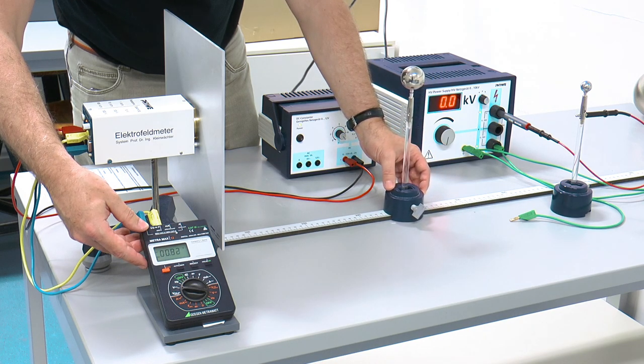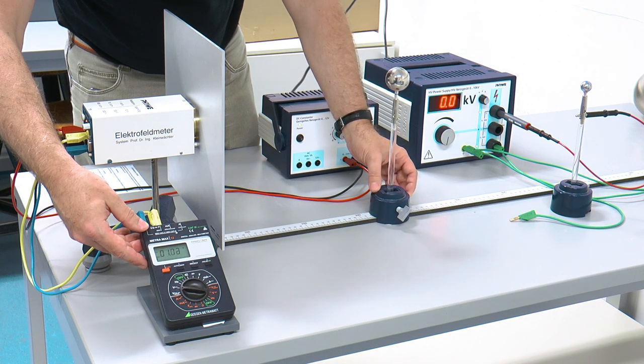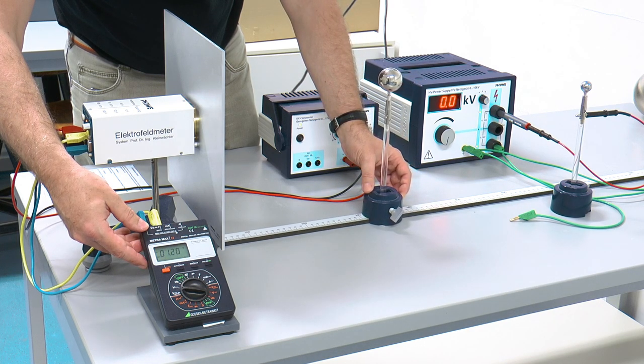You may need to adjust the measurement range of the electric field meter by pressing the appropriate button on the back of the meter.